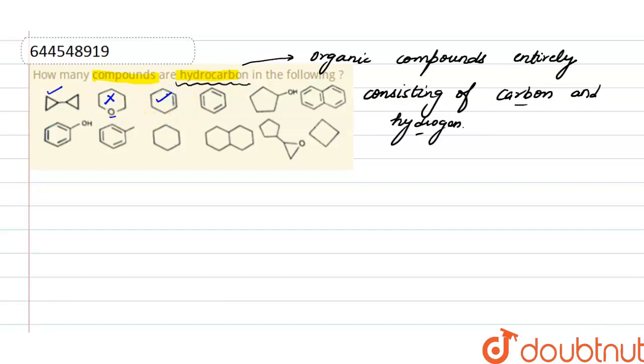In next compound, this is made up of carbon and hydrogen and this is the structure of benzene. The formula is C6H6, so this is also a hydrocarbon.